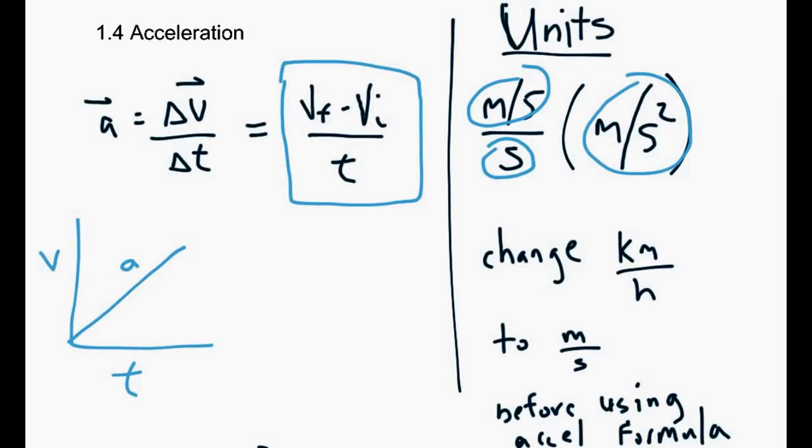One other tip, if you get a question that deals with kilometers per hour, you want to change those kilometers per hour to meters per second first. So do that right off the bat. Then plug those into the formula. So you'd have meters per second minus meters per second divided by seconds. And then the question should be good.